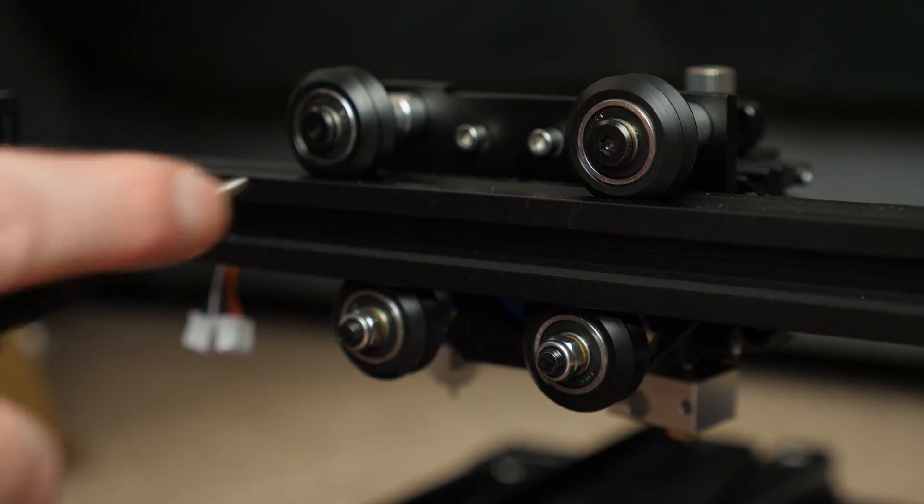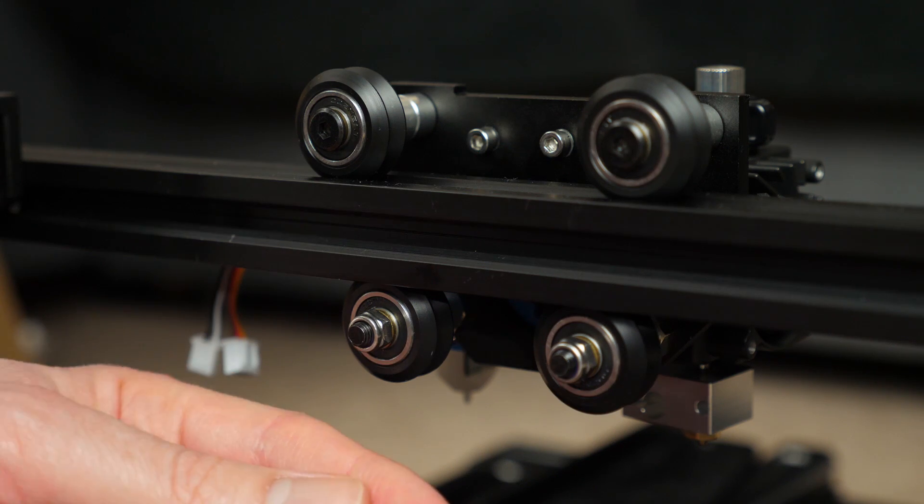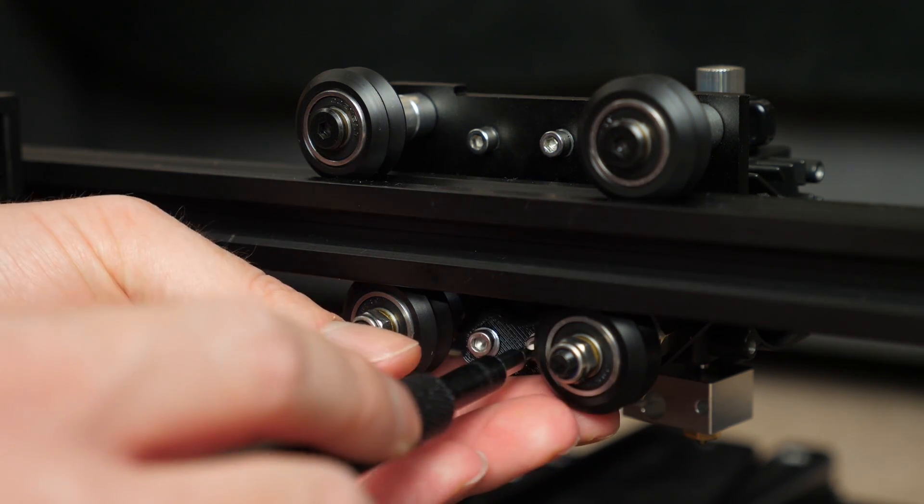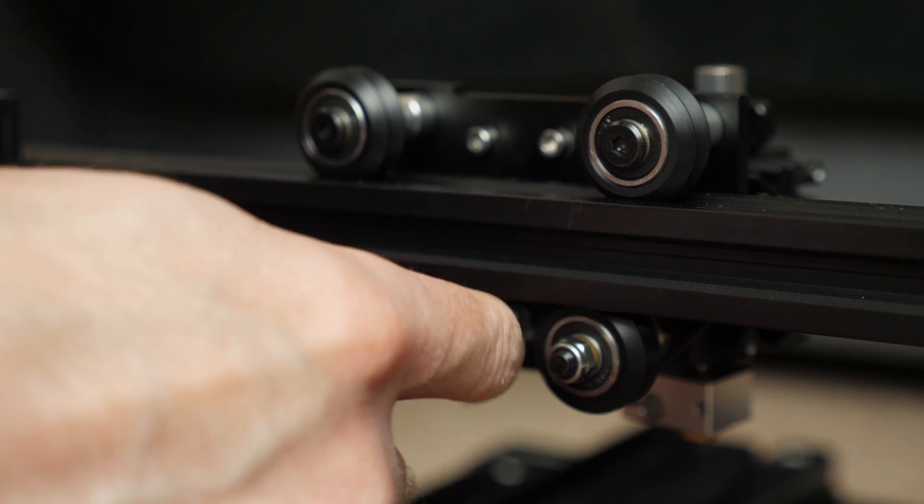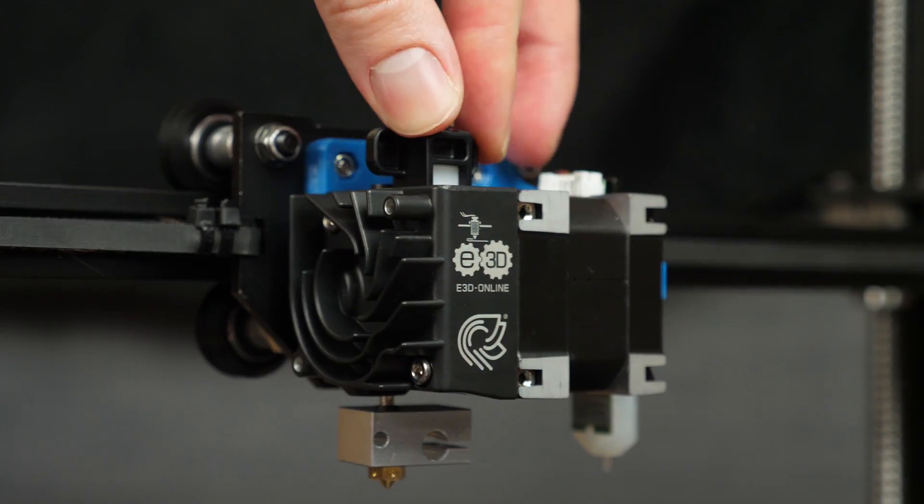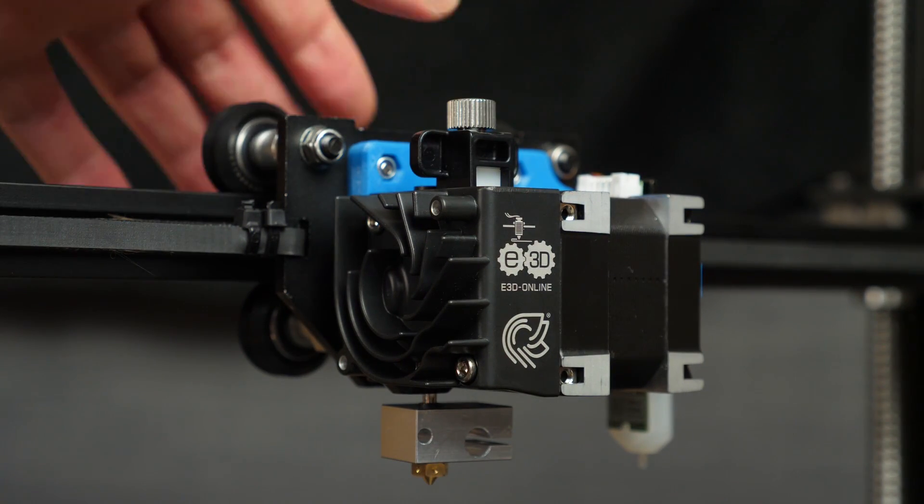Three screws into the original mounting holes hold the Hemera very nicely in place and lastly this small clamp on the back completes the mounting and there we have it a very simple rigid mounting system for the Hemera extruder and hotend. It was fairly easy to design and also easy to print and assemble.